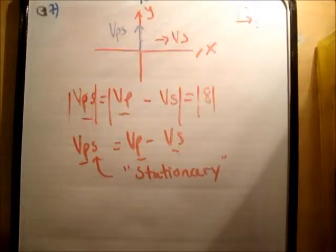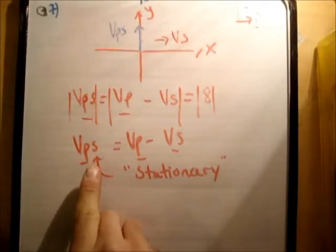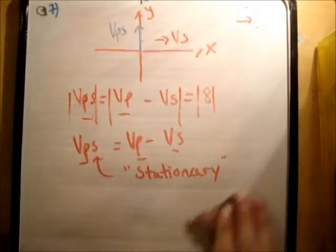So, where the passenger actually goes is not that direction. He actually moves diagonally. So, I hope I've convinced you of that vps, the passenger relative to the ship is in fact the j hat direction.